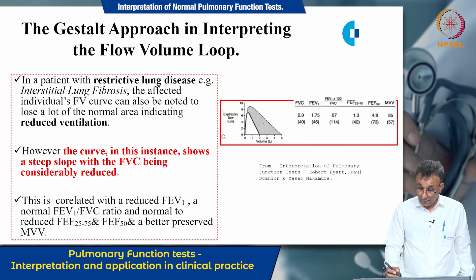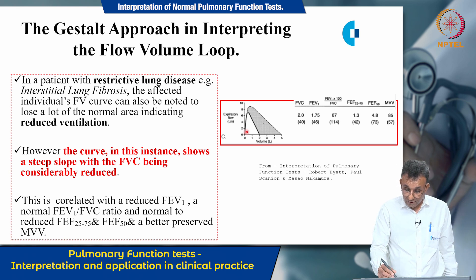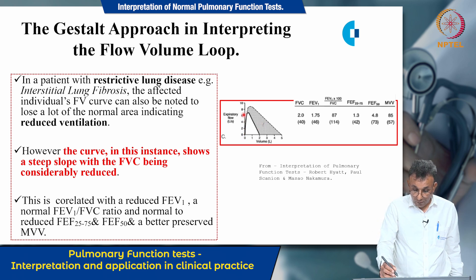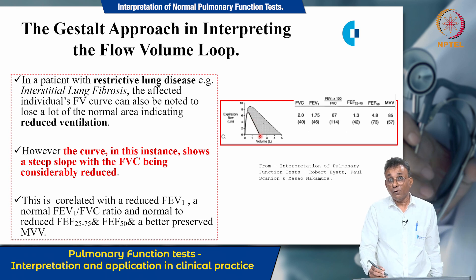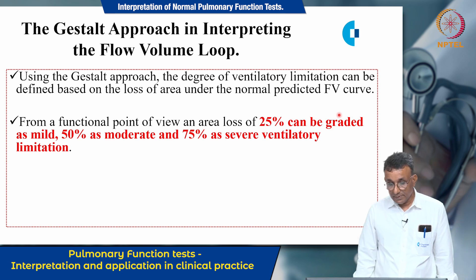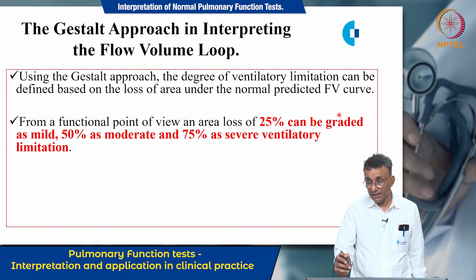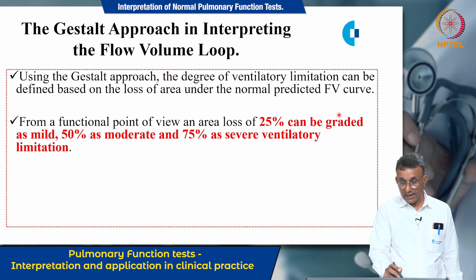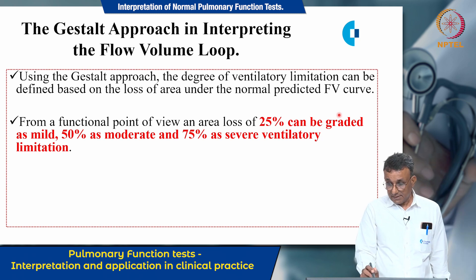This slide shows the flow volume loop in restrictive lung disease. You can see the predicted flow volume loop outline alongside the restricted flow volume loop outline — the difference in area shows the compromised respiratory reserve. The curve shows a steep slope with the FVC being considerably reduced, which is the characteristic feature of the flow volume loop in restrictive lung disease. Using the gestalt approach, area loss of 25% or greater indicates mild, 50% moderate, and 75% severe ventilatory limitation.